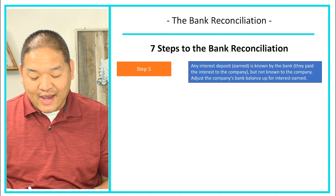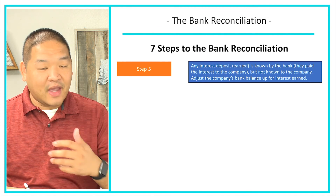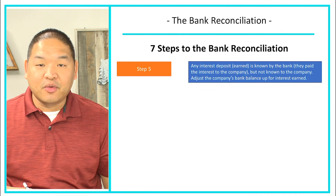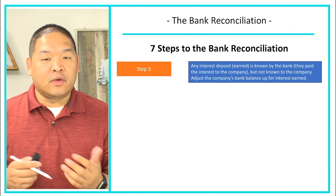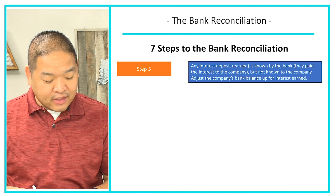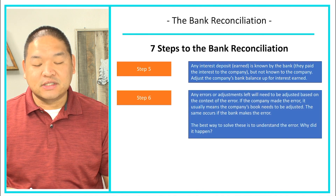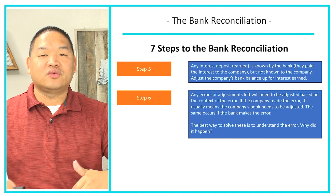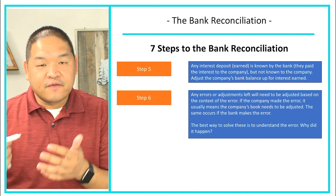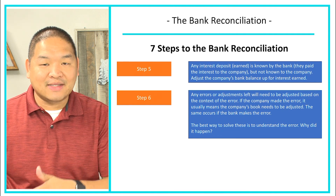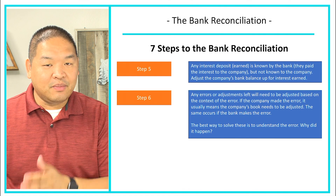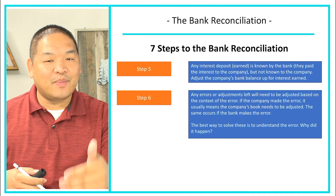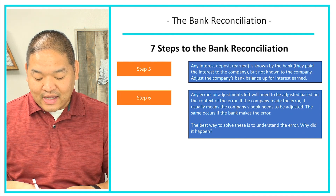Step number five: any interest earned is known by the bank — they paid the interest to the company — but not yet known by the company. So the company is going to adjust their books by adding the interest revenue to their cash account. Step number six: any errors or adjustments left will need to be adjusted based on the context of the error. You have to read the context of the error and decide whether it goes on the bank side or the book side, and then whether it's a plus or minus.